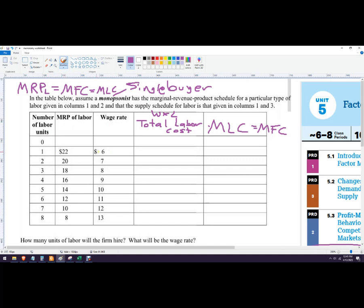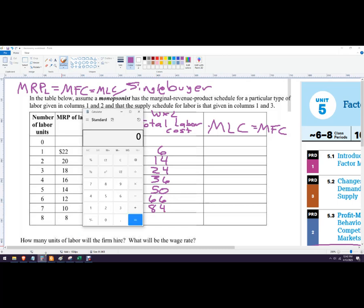So 1 times 6, 1 worker, or 1 unit times $6 is $6. 2, now in order to get the second worker, I have to raise the wage for both workers up to 7. So this is $14. 3 times, so now to get 3 workers to show up, I need to raise the wage up to $8 an hour. So that's $24, you get the idea here. $36, $50, $66, is it $84, $8 times $13, don't know that one. $8 times $13 is $104.